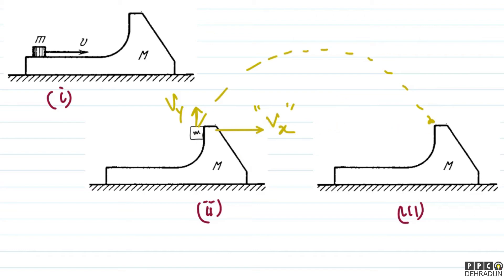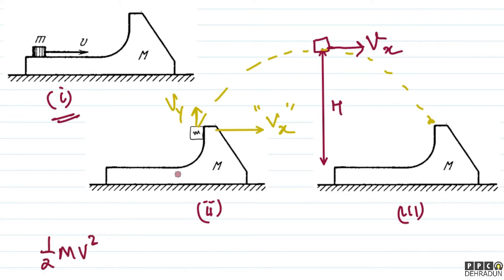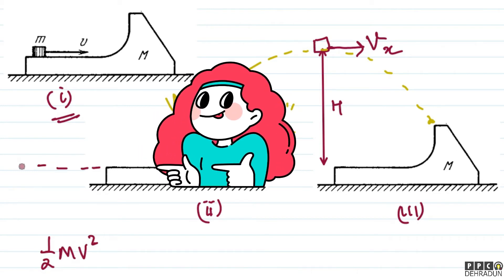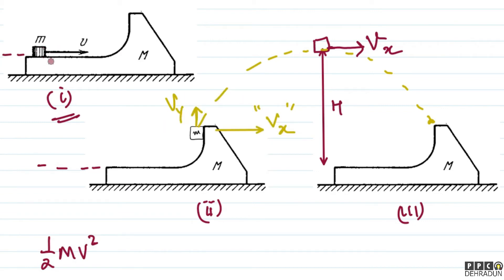Our focus is on finding height h. At the break-off point, small m's velocity in the x-direction is only vx. We can use energy conservation since no mechanical energy is wasted — all surfaces are smooth. In situation 1, the total mechanical energy of the system is ½mv². Taking the initial level as the reference (height = 0), the initial potential energy of the disc is zero.